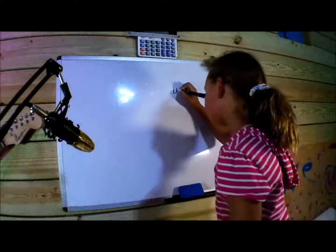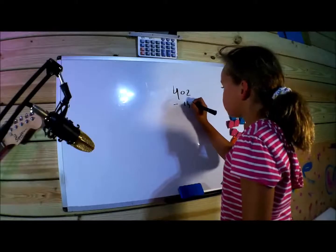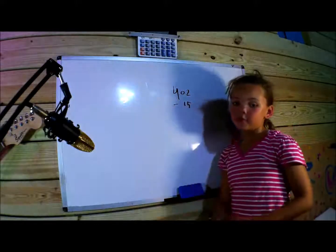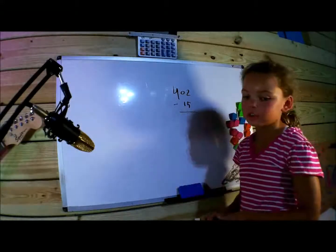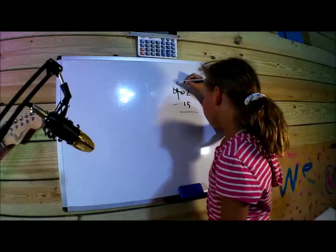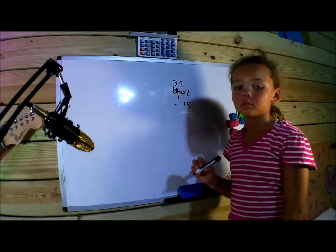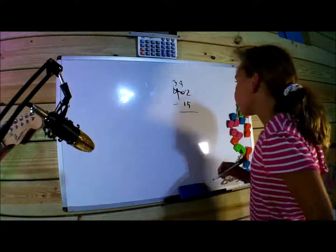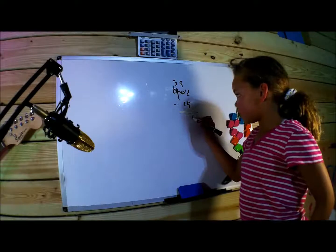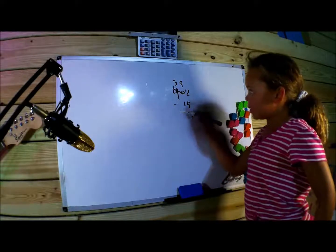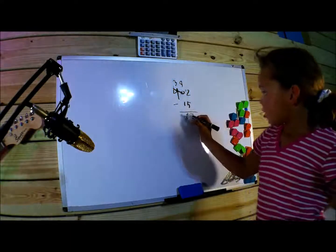One more example: 402 minus 15. We can't borrow from 0, so we need to borrow from 40. I'm going to turn the 40 into 39 and the 2 into 12. Here we take 5 from 12, which is 7. Then 1 from 9, that's 8. And 3 is just 3. So the answer is 387.